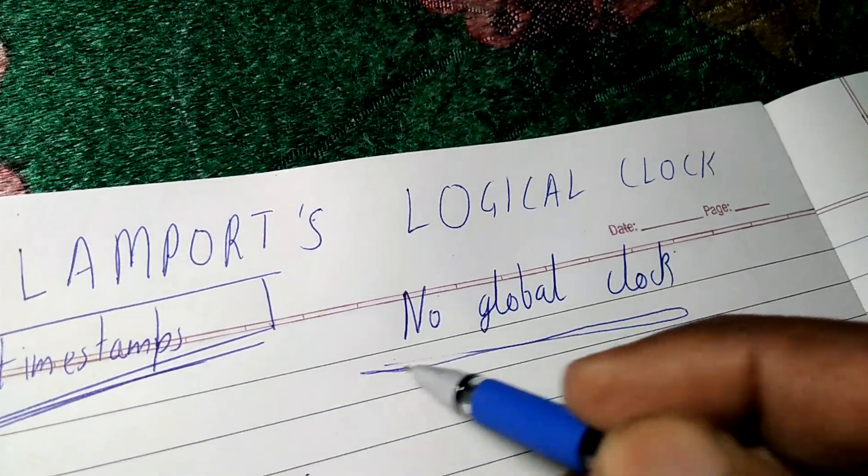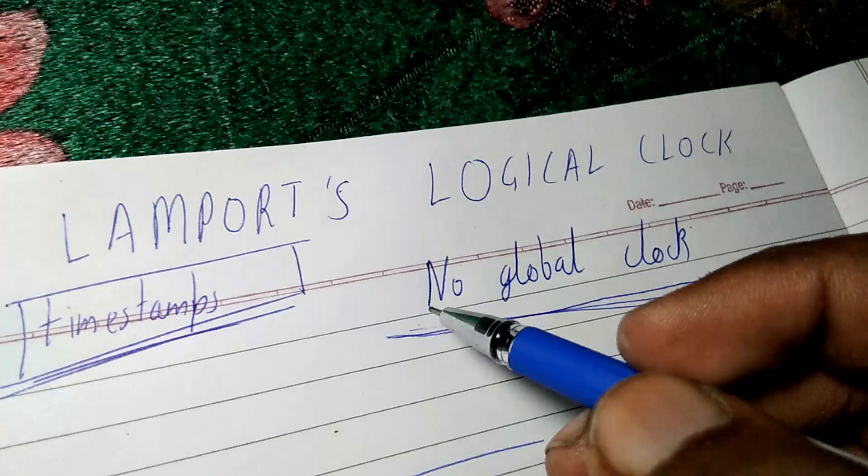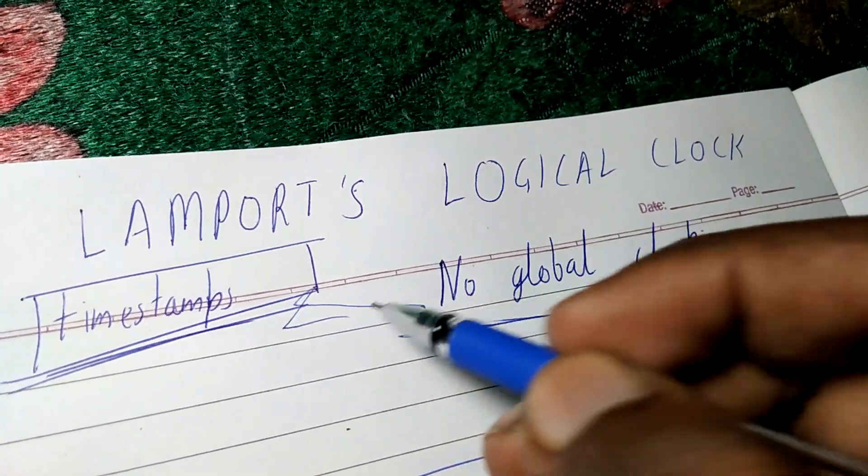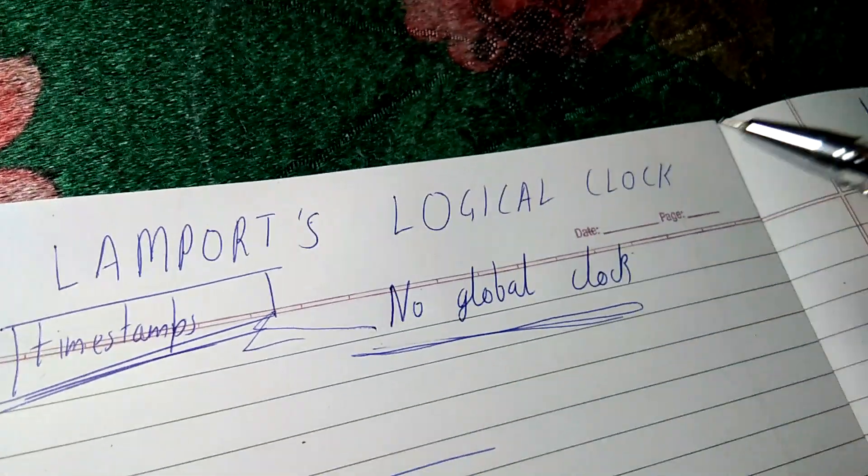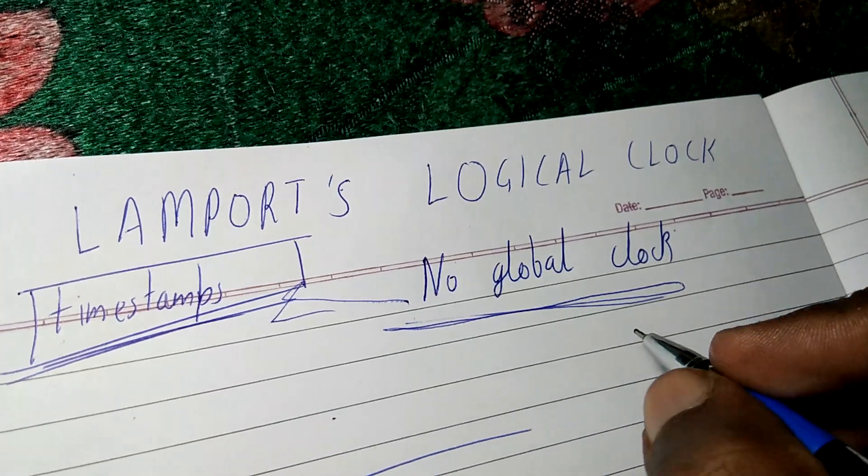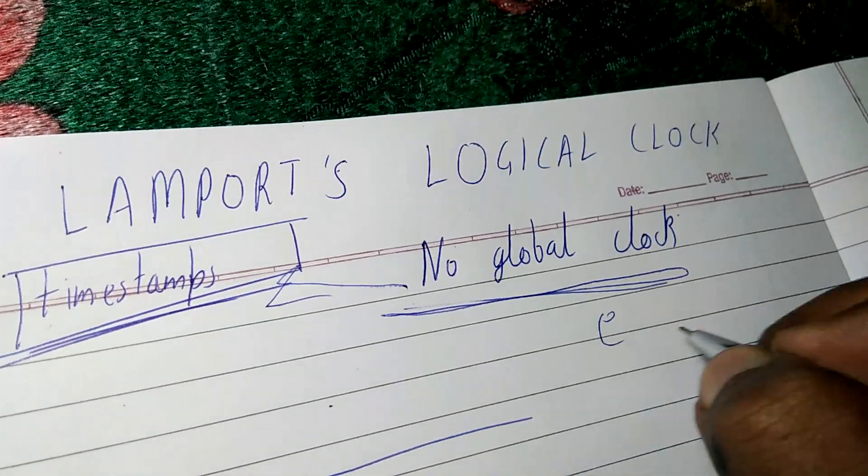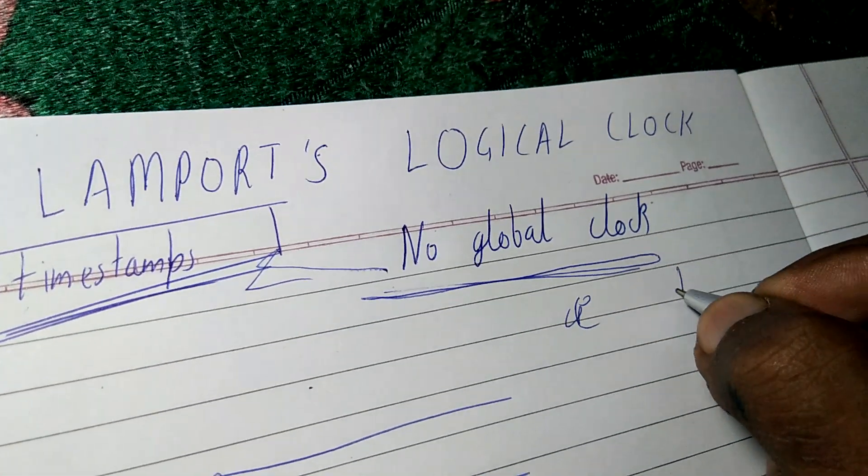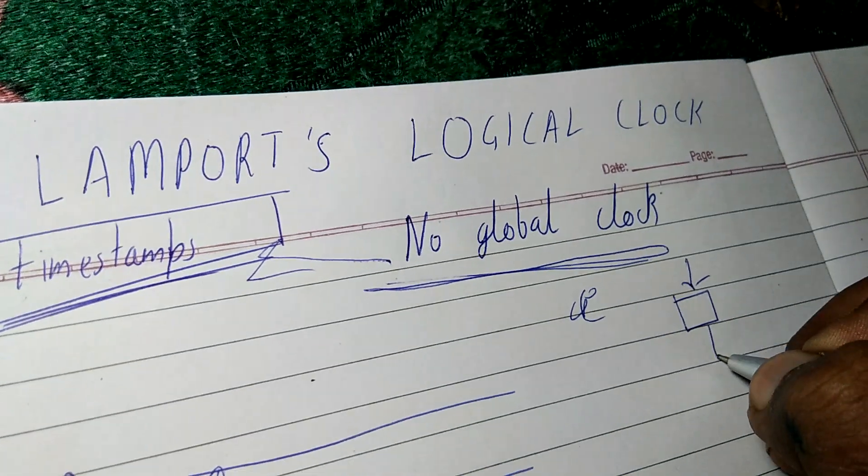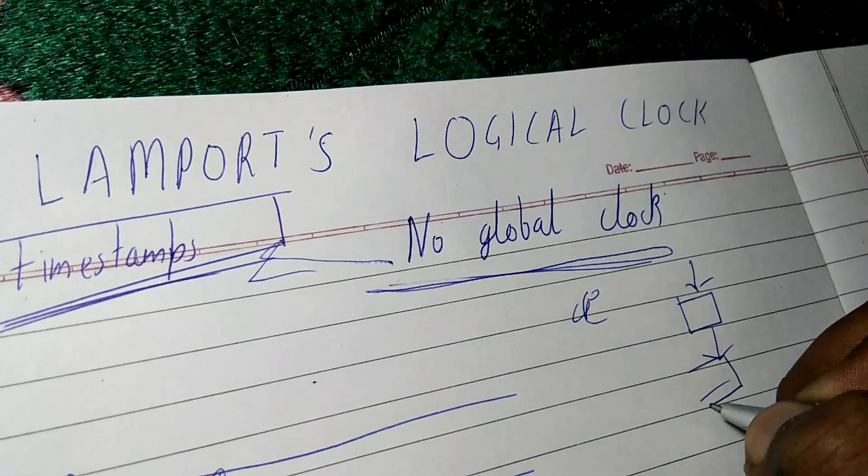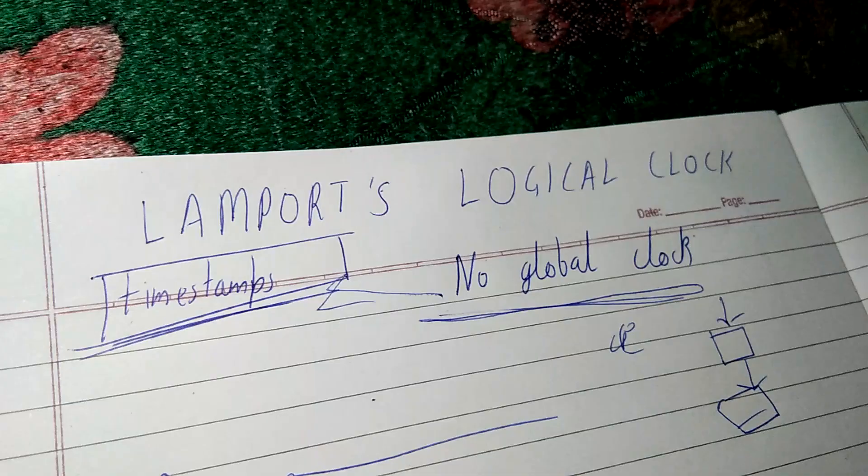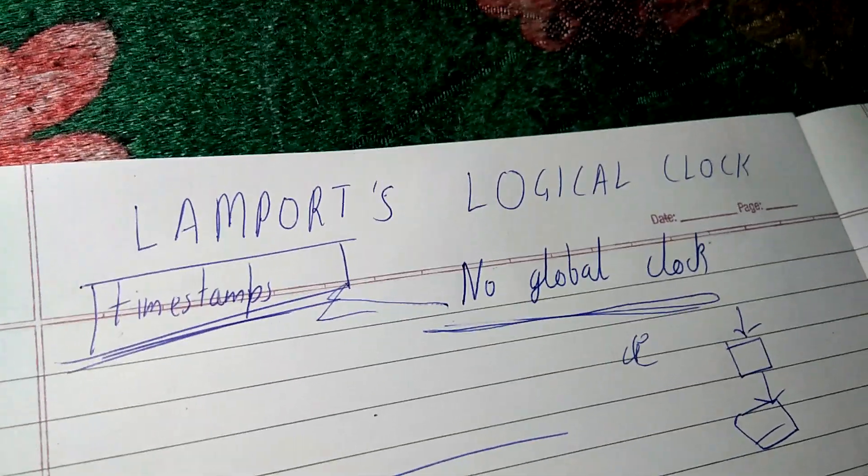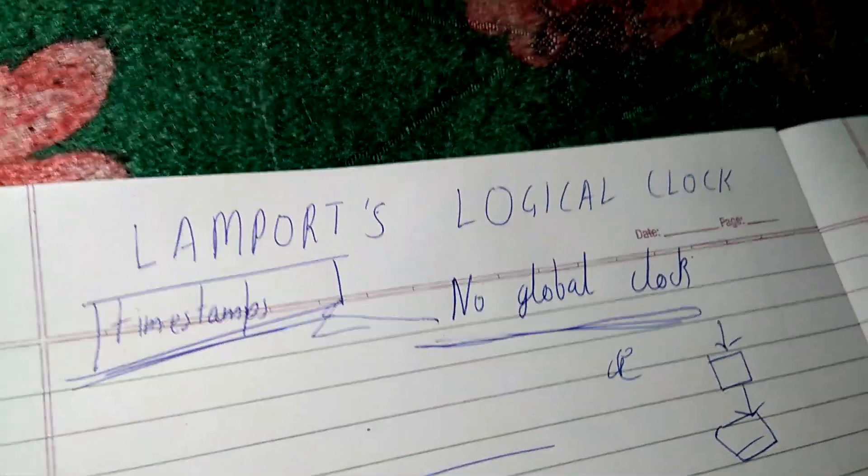First of all, we know that distributed systems do not have a global time clock, so we need to make use of timestamps so that we can arrange events in a proper sequence—to understand what is happening after what. This way we can have a proper picture of a distributed system.